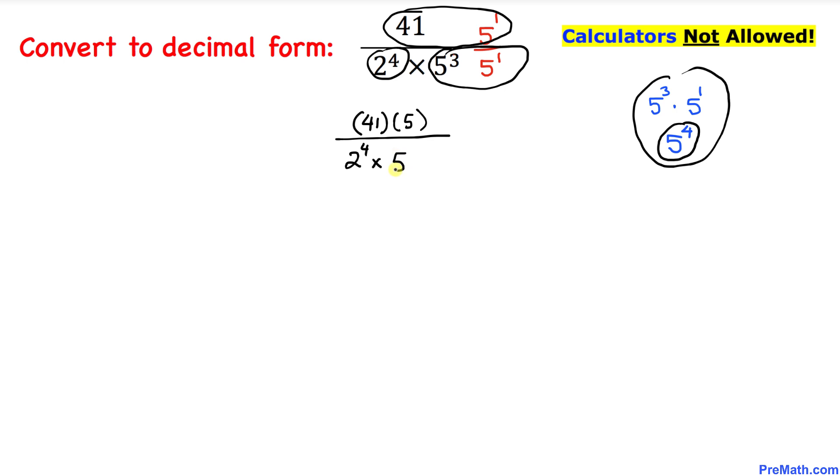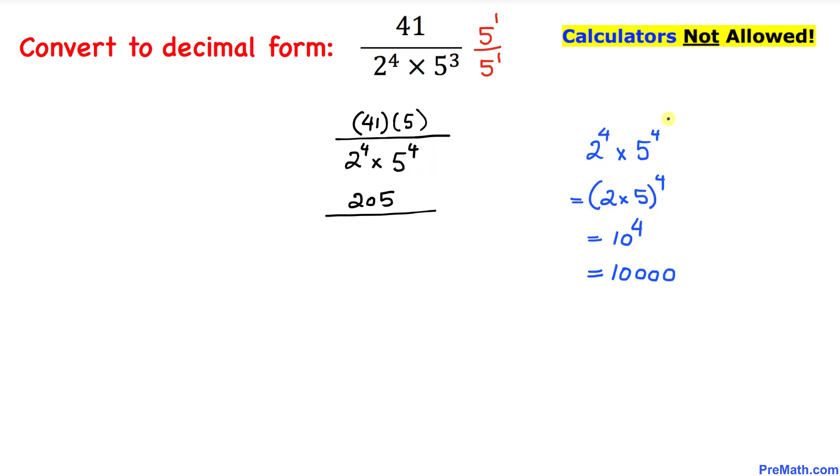So let me go ahead and write down 5 power 4. Now on the numerator, 41 times 5 is the same as 205, divided by 2 power 4 times 5 power 4.